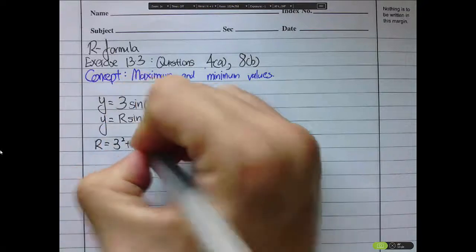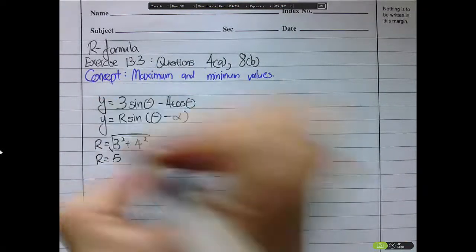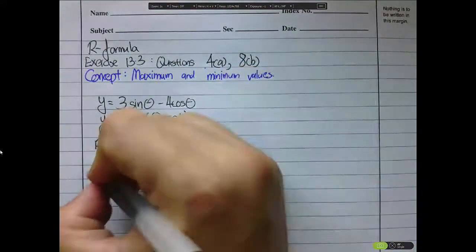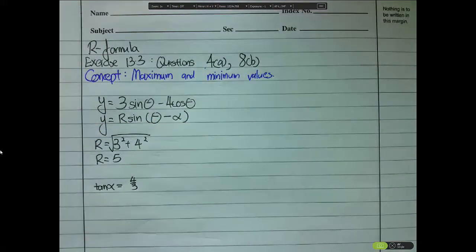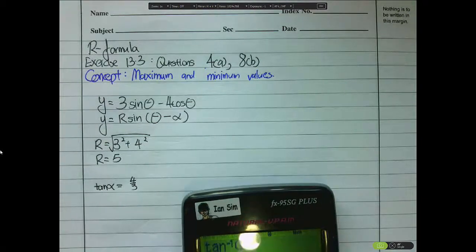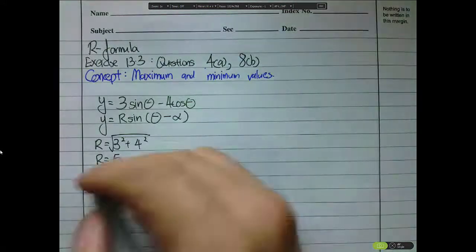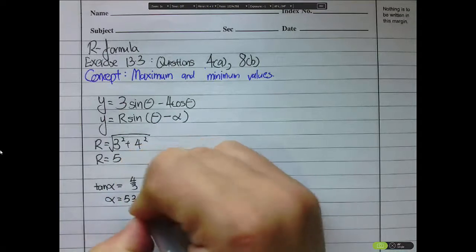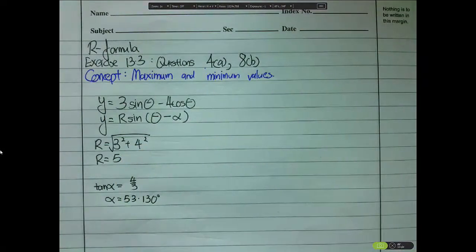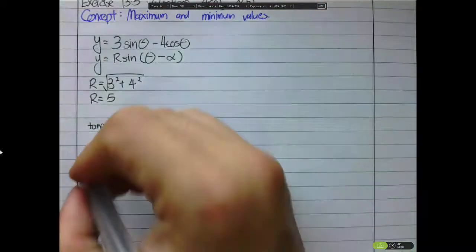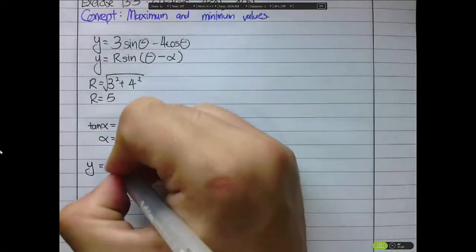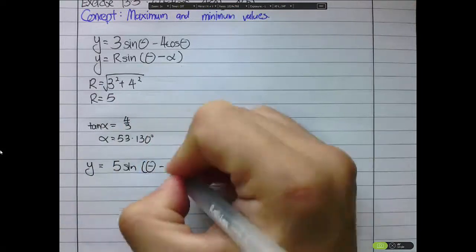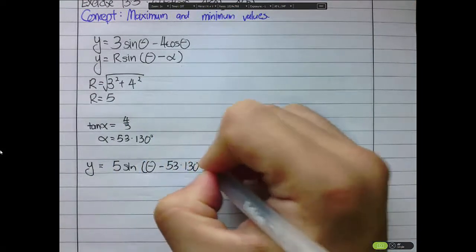r = √(3² + 4²) = 5. For α, tan α = 4/3. Ignore the negative sign — if tan α = 4/3, then α = 53.130°. So the whole term becomes 5·sin(θ - 53.130°).